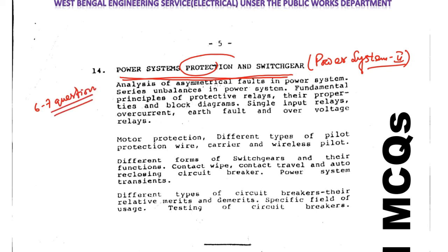So this is the complete syllabus. Study all the chapters which have been marked as very important so that you will be able to attempt most of the questions in the upcoming examination. I hope it is very clear what the whole syllabus is for recruitment of Assistant Engineer Electrical through Public Service Commission in different departments of West Bengal government — mostly PWD, PHE, and Irrigation Department. If you like the video, kindly subscribe to the channel. Thank you for watching.